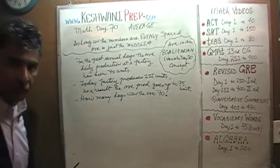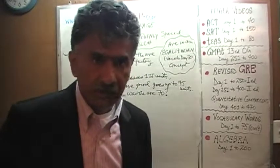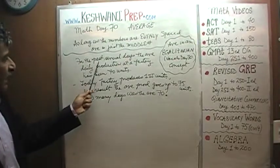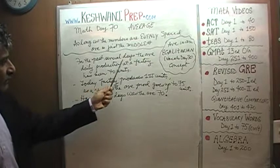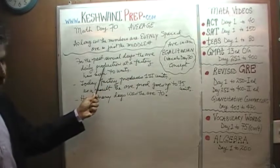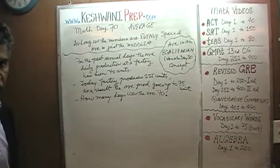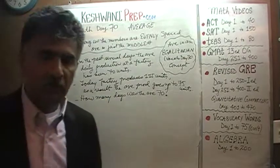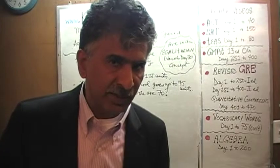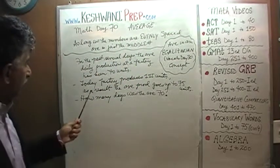Here is the problem. I am going to read it to you in the event that you have trouble reading my handwriting. It says: for the past several days, the average daily production at a factory has been 70 units. Today, however, it is different.